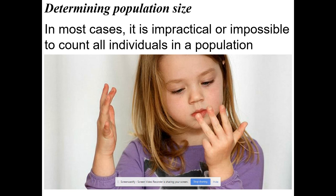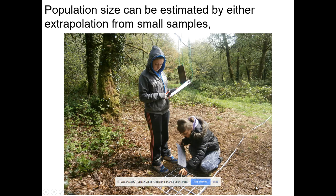It's really hard to count every single individual in a population, so there are a few ways to determine population size. One way is to use quadrants. For example, if you want to count pill bugs in a forest, you could count them in certain quadrants and then extrapolate based on the size of the area you're interested in — essentially using statistical estimation methods.